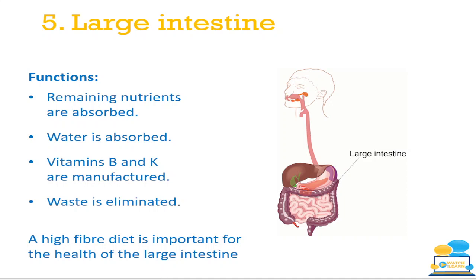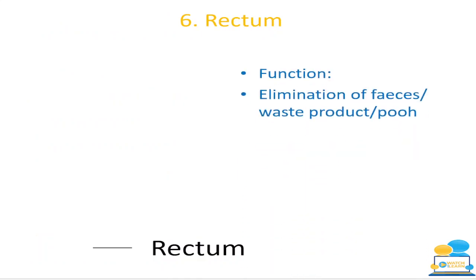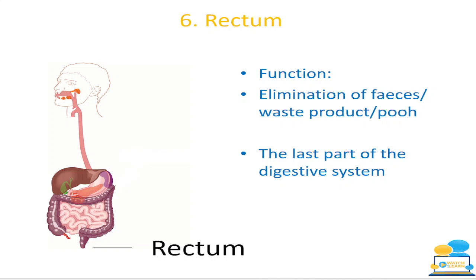The rectum is the final part of the digestive system. Its function is the elimination of feces — waste product — whatever the body can't use. This is the body's way of getting rid of what it doesn't want, and at this point the digestive process is fully finalized.